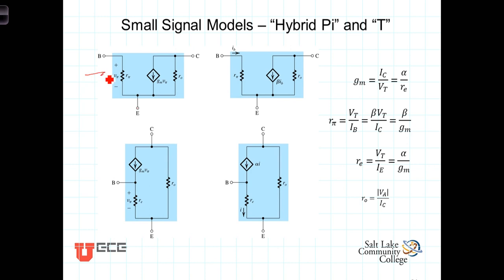Looking into the base, we see the input resistance, R sub pi, and the voltage, V sub pi, was Vbe that we have been working with. So our V sub pi and Vbe, in this case, are the same thing.